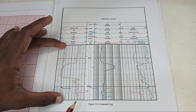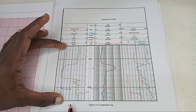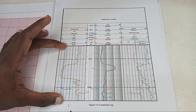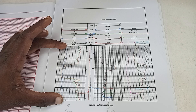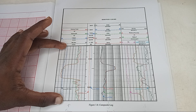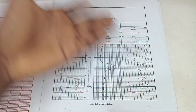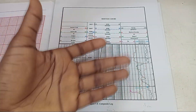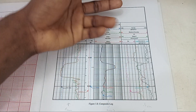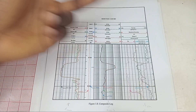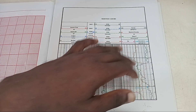We have the gamma ray log — this is the gamma ray log. This is the resistivity log. And this is the sonic, neutron porosity, and density log. Many times they are stacked together because they usually do the same thing: find porosity. The density log, neutron porosity, and sonic log are all used to measure porosity.